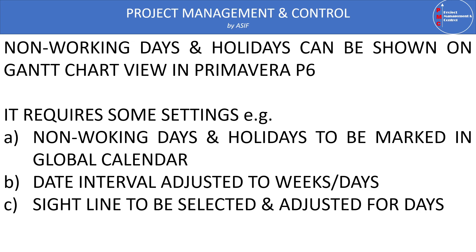Non-working days and holidays can be shown on the Gantt chart in P6. To show them, we need to make some settings. The most important setting is the calendar, which is a very important feature of Primavera P6 and affects many calculations. We need to mark weekly holidays and non-working days in the global calendar. We also need to set the date interval to week and days, and set the sight lines to be adjusted for days. Most importantly, non-working days and holidays must be marked in the global calendar.